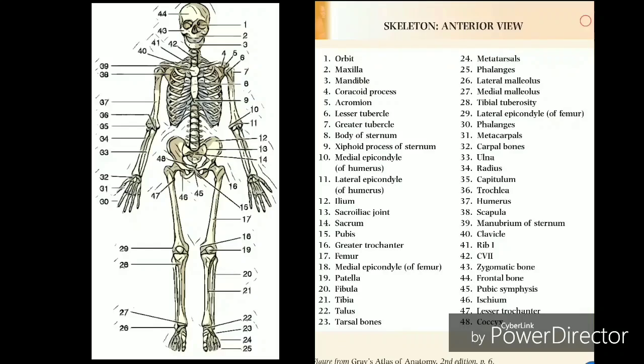Femur, long thigh bone articulating with the iliac bone, tibia and patella, it is the longest bone in the human body. Tibia, long bone forming the inner portion of the leg located between the femur and the tarsus, foot bone. Fibula, long bone forming the outer portion of the leg located between the femur and the tarsus, foot bone.